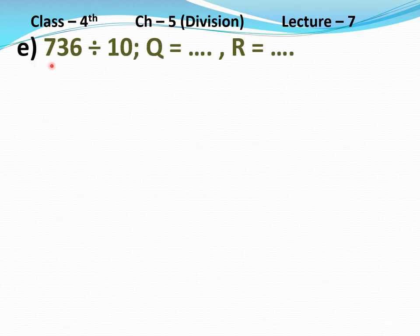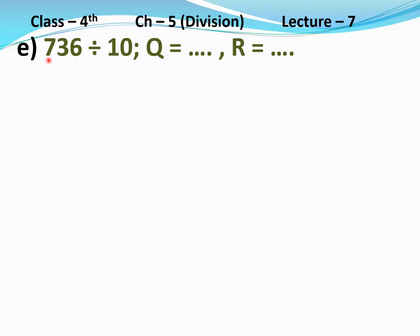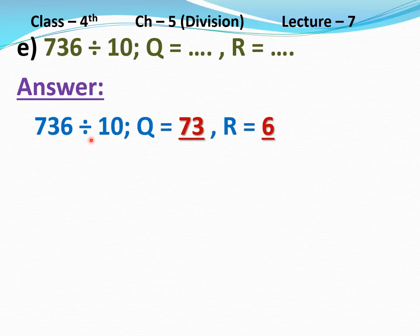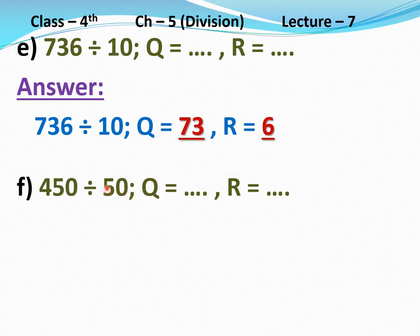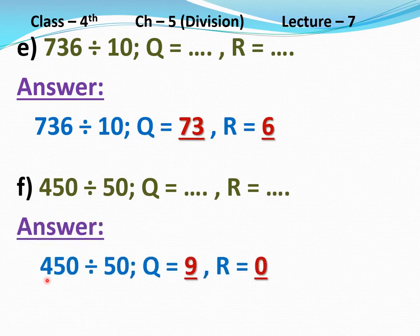Part E: 736 divided by 10. Divisor is 10, so the last digit of the dividend, 6, will be the remainder. The remaining digits, 7 and 3, form 73, which will be the quotient. Answer: 736 divided by 10 — quotient equals 73, remainder equals 6. Clear? Part F: 450 divided by 50. There is a 0 in the dividend and a 0 in the divisor, so these zeros cancel. Now divide 45 by 5: 45 divided by 5 equals 9. Quotient equals 9 and remainder equals 0. Answer: 450 divided by 50 — quotient equals 9, remainder equals 0. Clear?